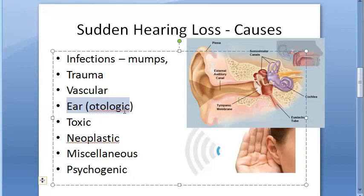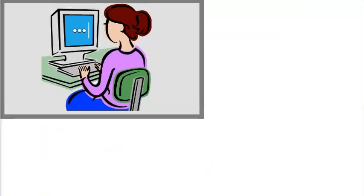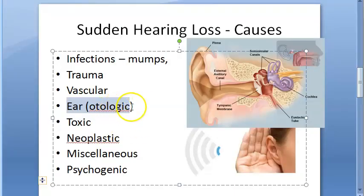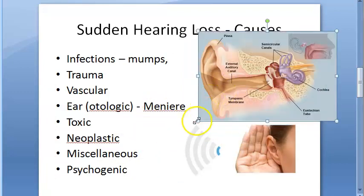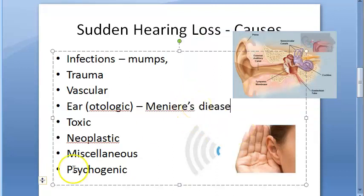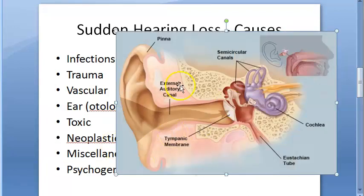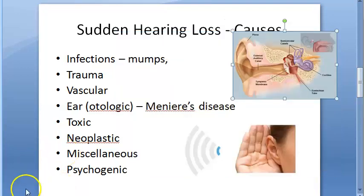Otologic causes include Meniere's disease, Cogan's syndrome, and large vestibular aqueduct. Meniere's disease is a problem with the inner ear that causes vertigo, dizziness, and tinnitus, among other symptoms.